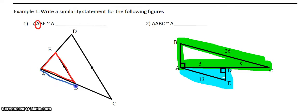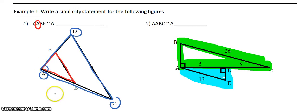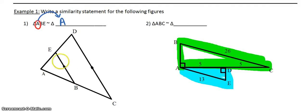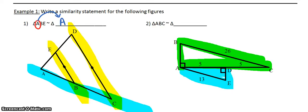We want to say that triangle ABE is similar to the bigger triangle with angles A, C, and D. Angle A is congruent to itself because the two triangles share that angle, so we list A first. For the remaining angles, we have some parallel lines — those little arrows mean these two lines are parallel. With parallel lines, corresponding angles are congruent. Using the transversal, these two angles are congruent because they're in the same position. So B would be congruent to C, and D would be congruent to E.